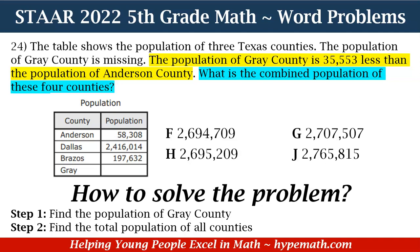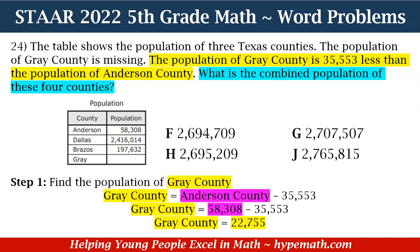Let's start with step one — finding the population of Great County. Great County is going to be equal to Anderson County minus 35,553. Why is that? Because in our word problem, the population of Great County is 35,553 less than the population of Anderson County. So Great County equals 58,308 minus 35,553, which equals 22,755.